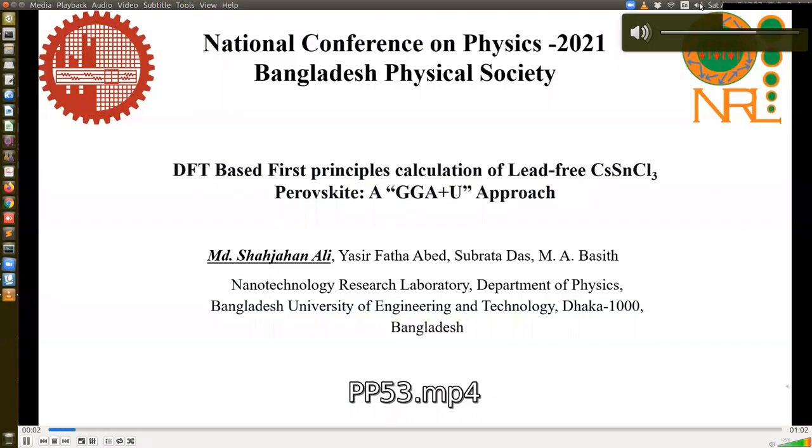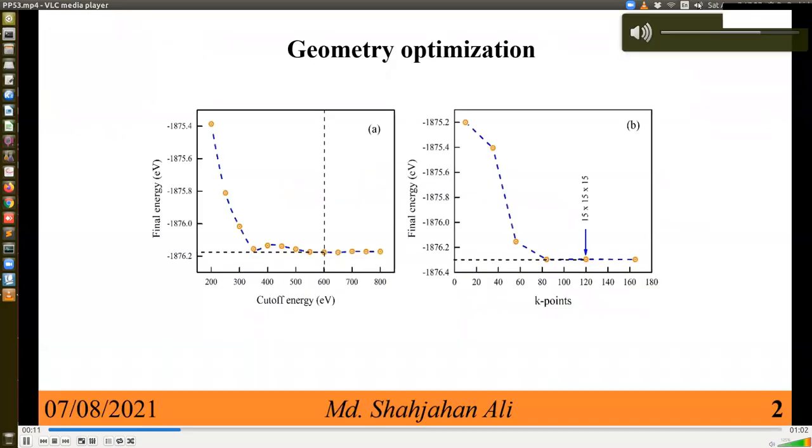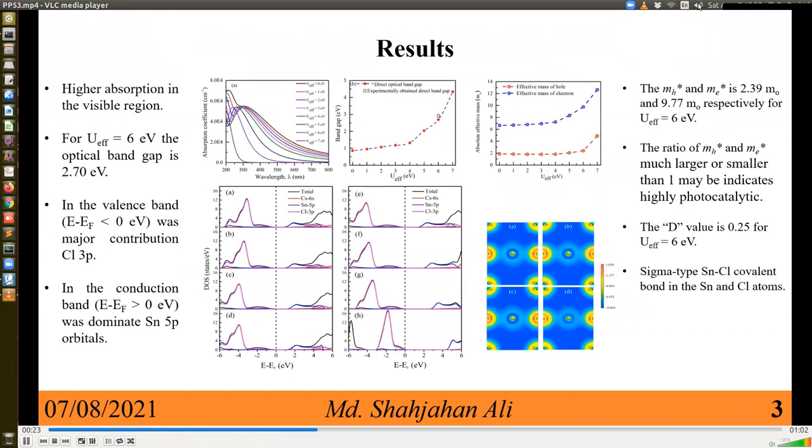Welcome to our poster. DFT Based First Principle Calculation of Lead-Free Cesium Tin Chloride Perovskite - a GGA Plus U Approach. Our theoretical calculations carried out using CASTEP code in Materials Studio. We used 600 eV cutoff energy and 15 x 15 x 15 high symmetry k-points are used for all calculations. We observe that higher absorbance in the visible region for U effective equal to 6 electron volt. Optical band gap is 2.7 electron volt which is 90 percent accuracy with the experimental result. The density of states indicate tin 5p and chlorine 3p orbital make valence band and conduction band make from tin 5p and cesium 6s orbital. The ratio of effective mass of hole and effective mass of electron, the value for our sample is 0.25 which indicates cesium tin chloride have photocatalytic performance. From the electron charge density map we observe that tin-chloride sigma type covalent bond presence in cesium tin chloride.